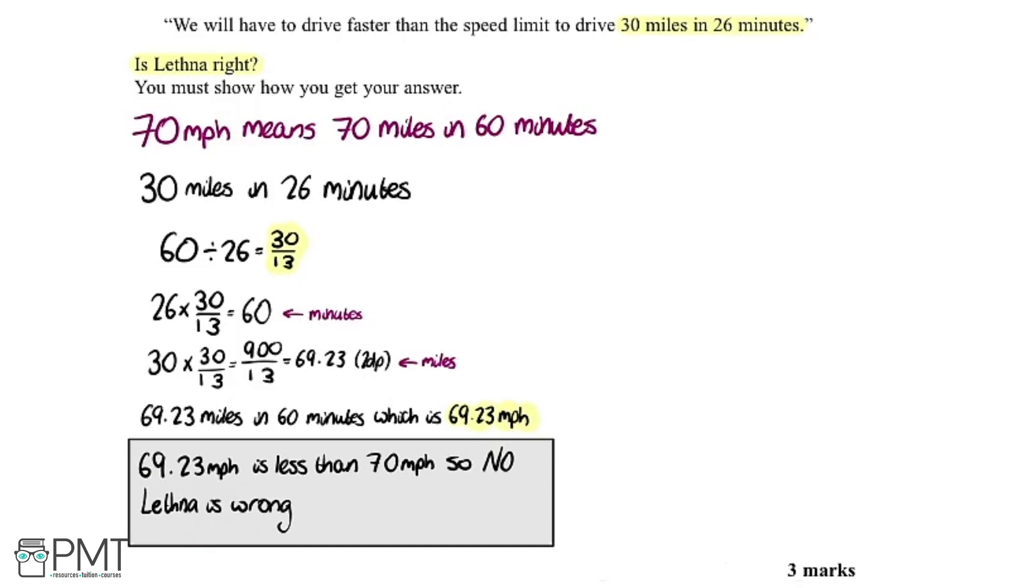So if we look to see where we get the marks we get one mark here for working out this multiplier. We get another mark here for using that to work out this number here so 69.23. So we know it's going to be 69.23 miles an hour and we got our final mark here for a conclusion something along these lines.